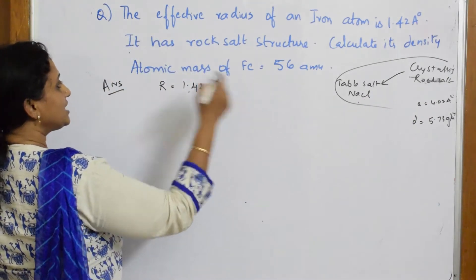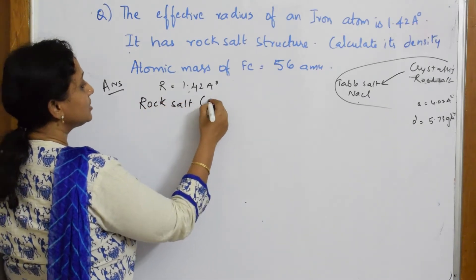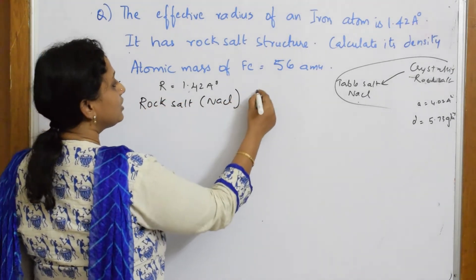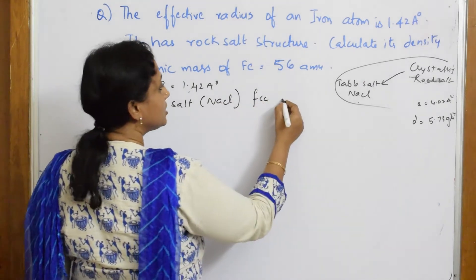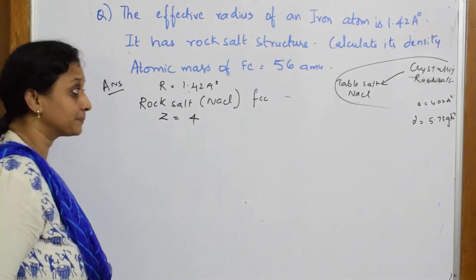So your rock salt, nothing but you can take it as NaCl. When I speak about rock salt, let me write rock salt, that is your NaCl. We very well know it has FCC structure. So for this particular thing, Z is equal to 4, done.